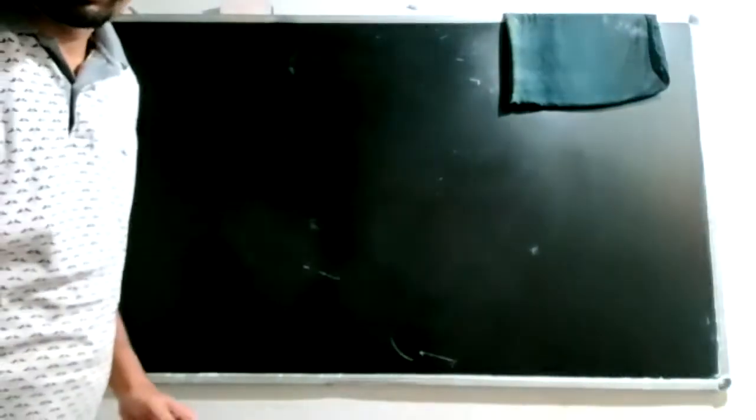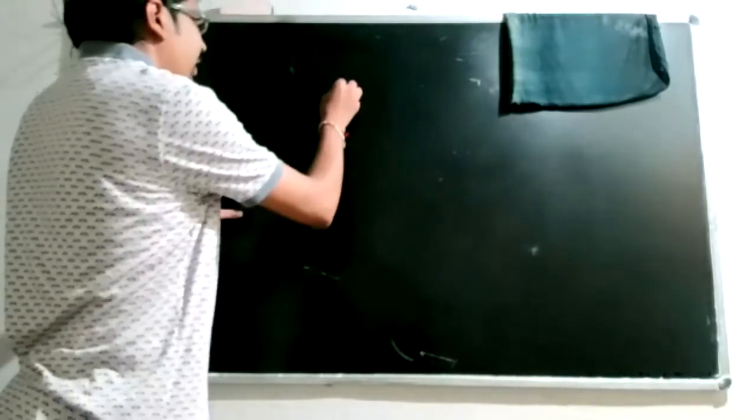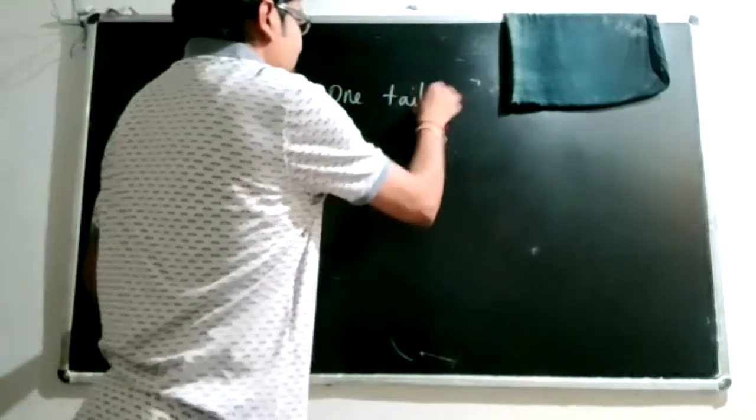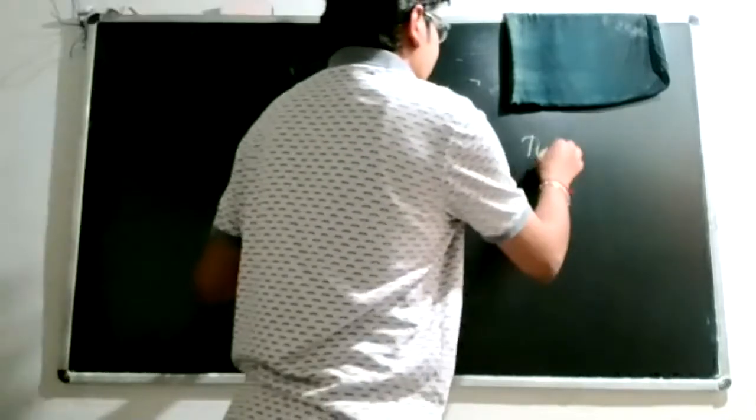Today we will continue discussing hypothesis testing as well as the various tests available in statistics to test means and proportions. In the third recording, we started talking about a type of test based on the critical region, and those are categorized into one-tailed or single-tailed and two-tailed tests.